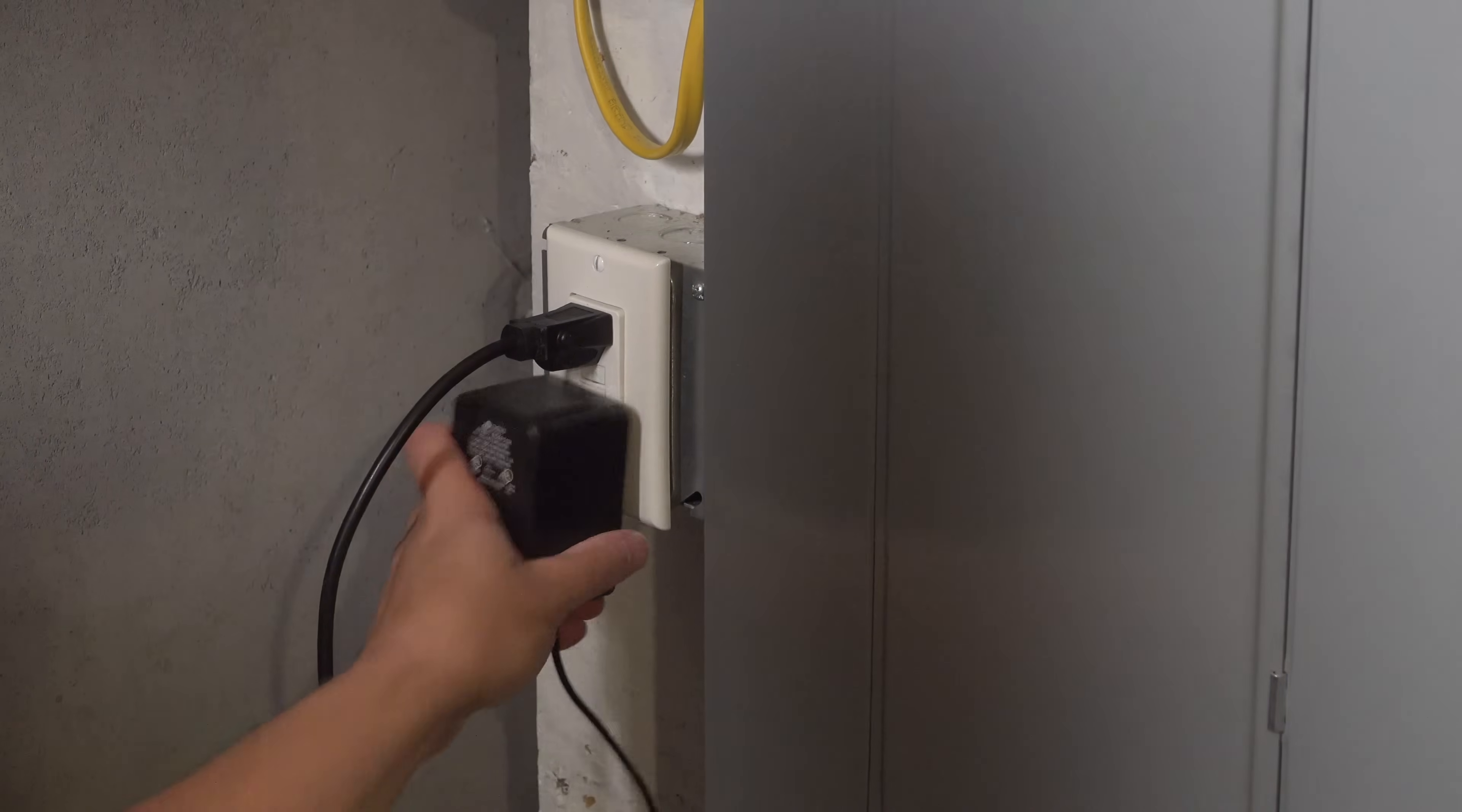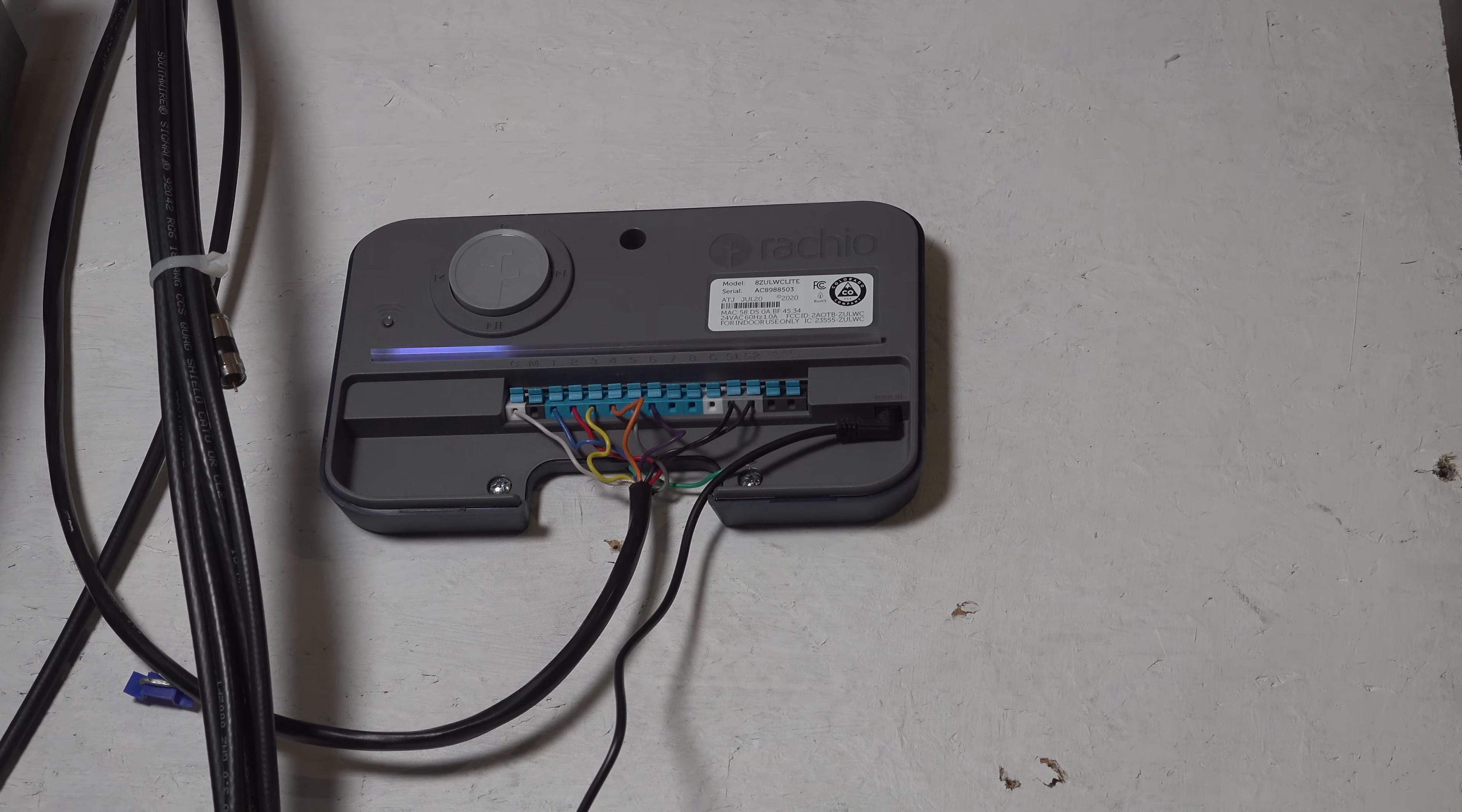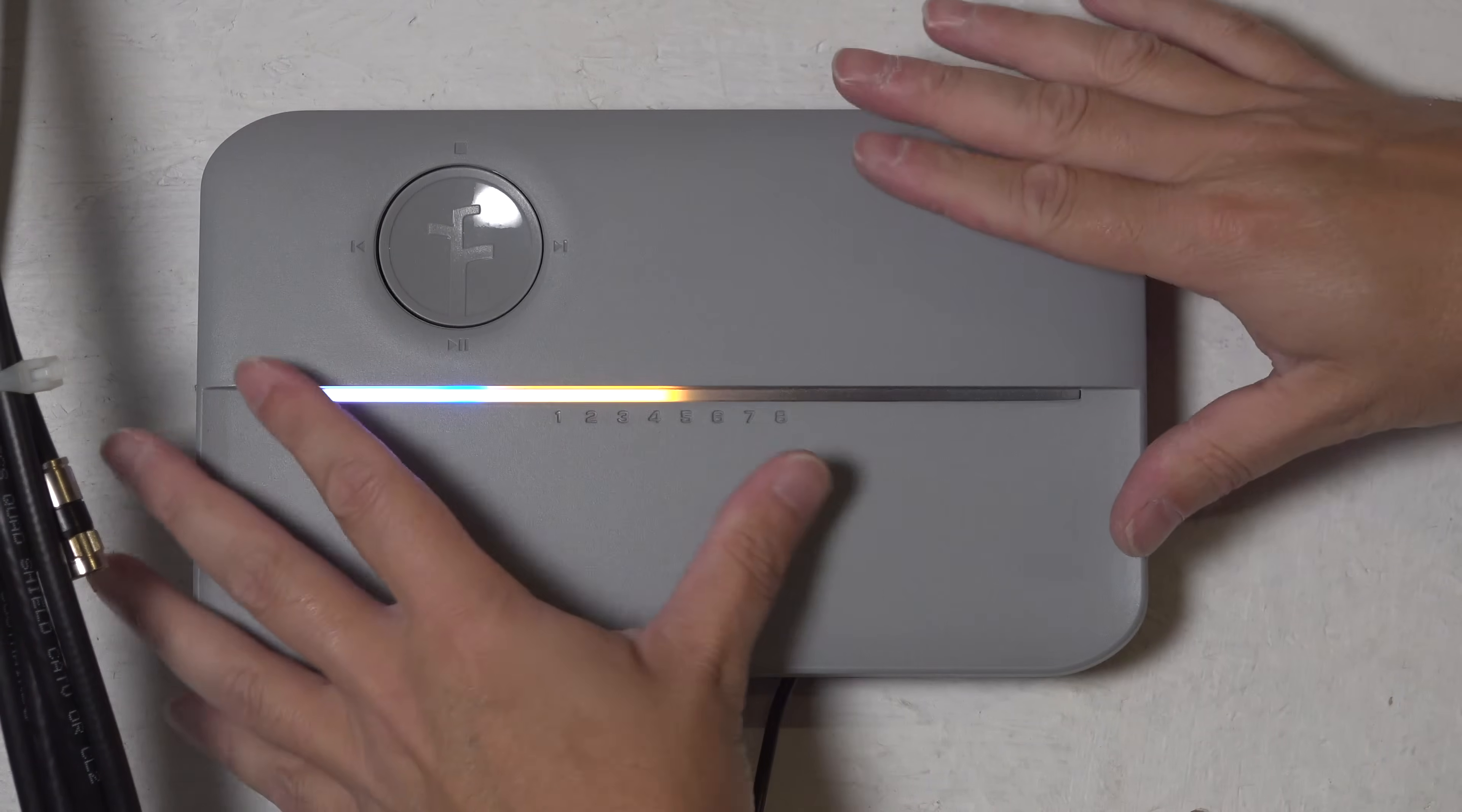With everything connected you can grab the power supply that came with your Rachio. It just simply plugs into the power import. With everything connected we can put the cover back on the unit but you don't even need to screw this thing on. It's actually got magnets on the back side of the cover that hold it tightly in place.